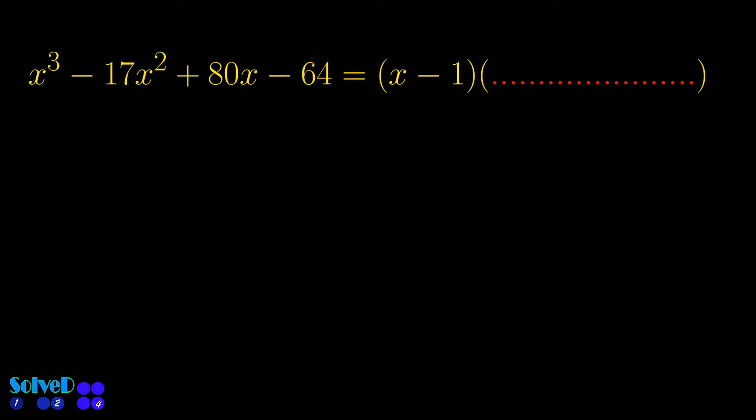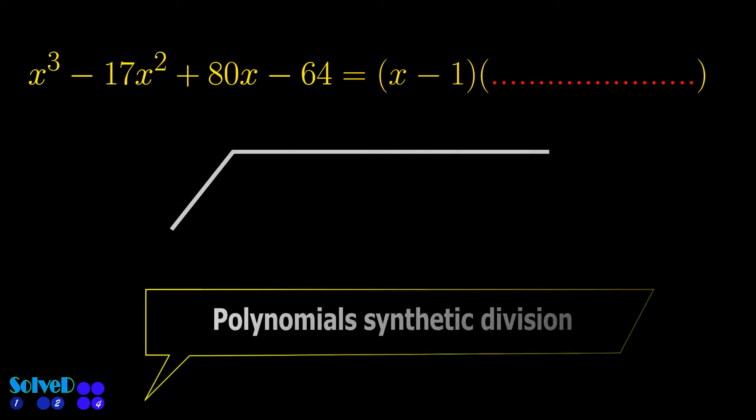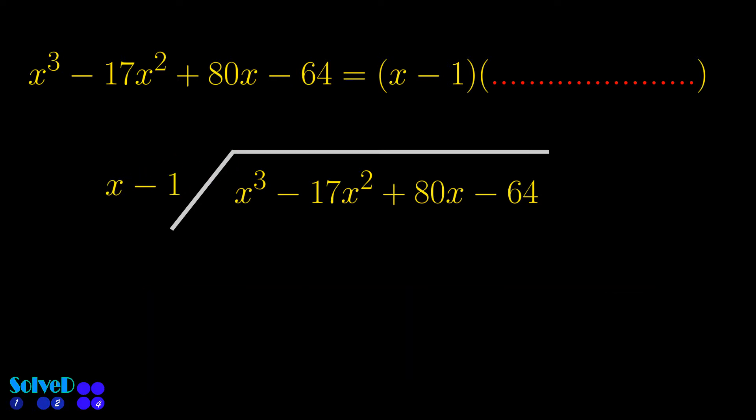We can use the method of synthetic division to find this new factor. For this, take 1 from x minus 1 and write the coefficients from the given function in this way.